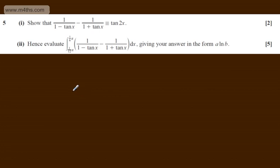This is question number 5. In the first part, for two marks, we need to show that 1 over (1 minus tan x) minus 1 over (1 plus tan x) can be written as tan 2x.